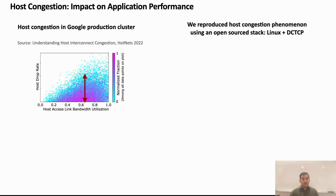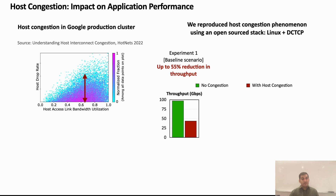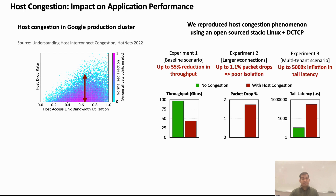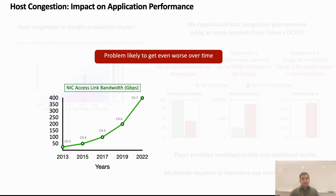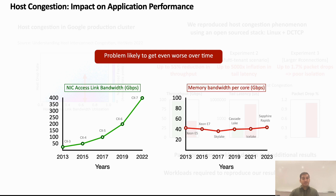We reproduced the host congestion phenomenon in Google's cluster, but using an open-source network stack and NIC protocol. Although the Google study focused mainly on packet drops, we also demonstrate the impact on app-level performance. We observe that host congestion can lead to up to 55% throughput degradation and up to 5000x tail latency inflation. We have open-sourced the workloads needed to reproduce all our results. The problem is likely to get worse over time: while access link bandwidths are expected to increase by 4 to 14x over the next few years, technology trends for memory bandwidth have largely remained stagnant. Therefore, memory bandwidth contention will increase over time.